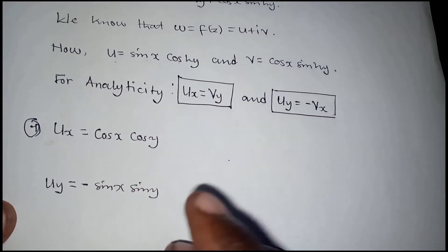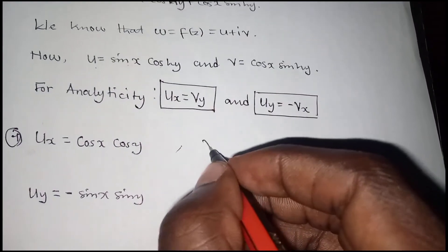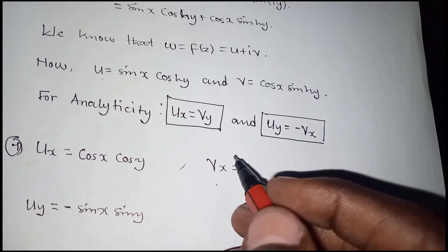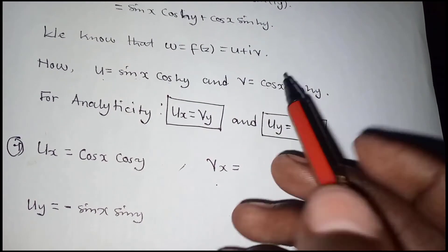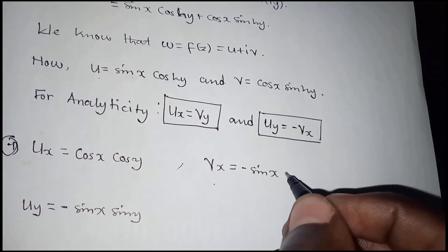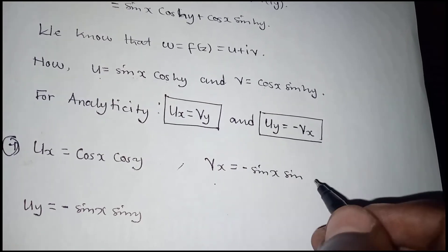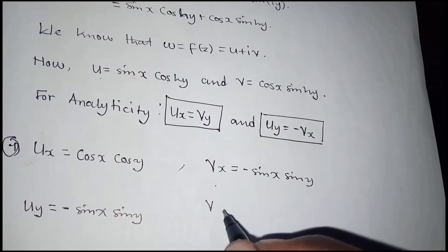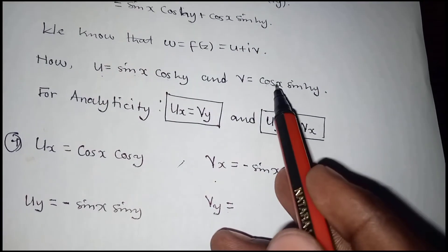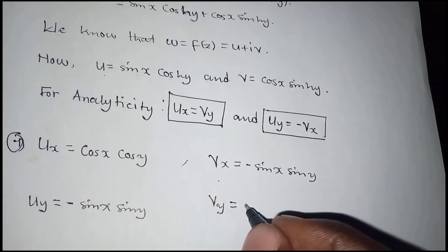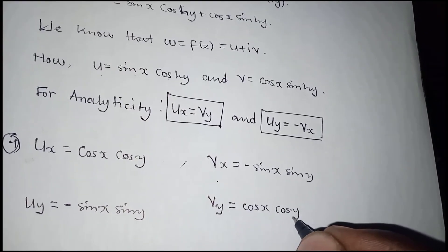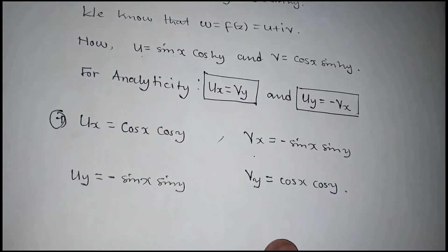For the function v, differentiating with respect to x: cos changes to negative sine of x, and the rest remains, giving negative sine x sinh y. Then differentiating v with respect to y: cos x stays as cos x, and sine y becomes cos y, giving cos x cosh y.